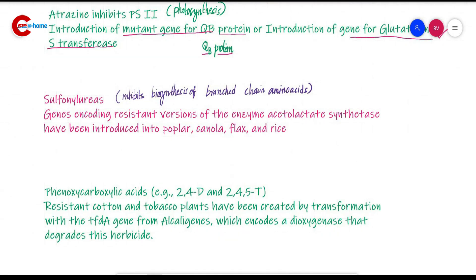Next is sulfonylurea. Sulfonylurea inhibits the biosynthesis of branched-chain amino acids. The mode of developing herbicide resistance here is by introduction of a resistant gene: acetolactate synthase, otherwise known as ALS.